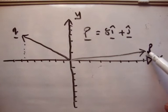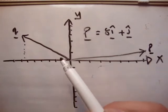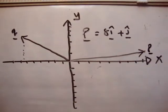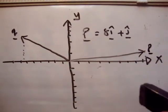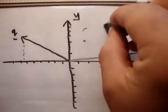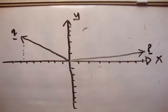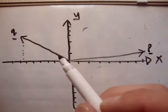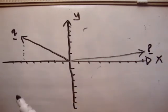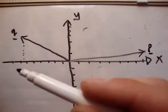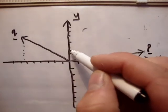So I'm 8 units in the x-axis and positive 1 unit in the y. And then Q — we're given Q is minus 7î plus 4ĵ. So that's minus 7 units in the negative x-axis and plus 4 units in the y-dimension.